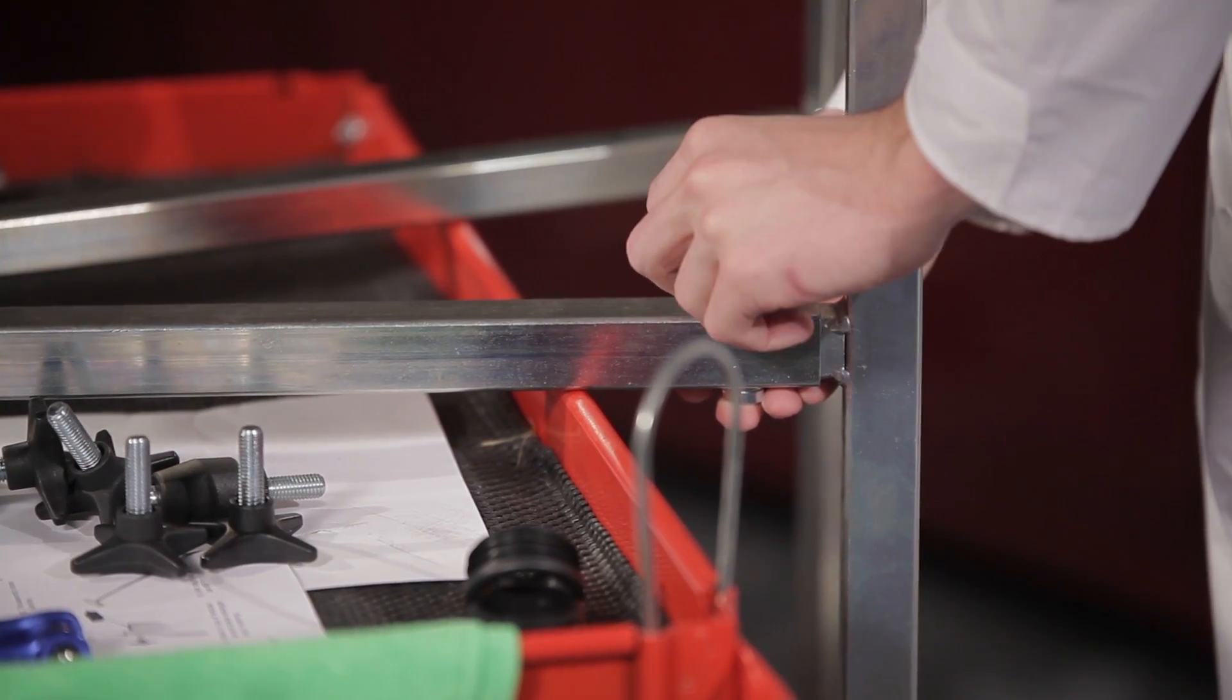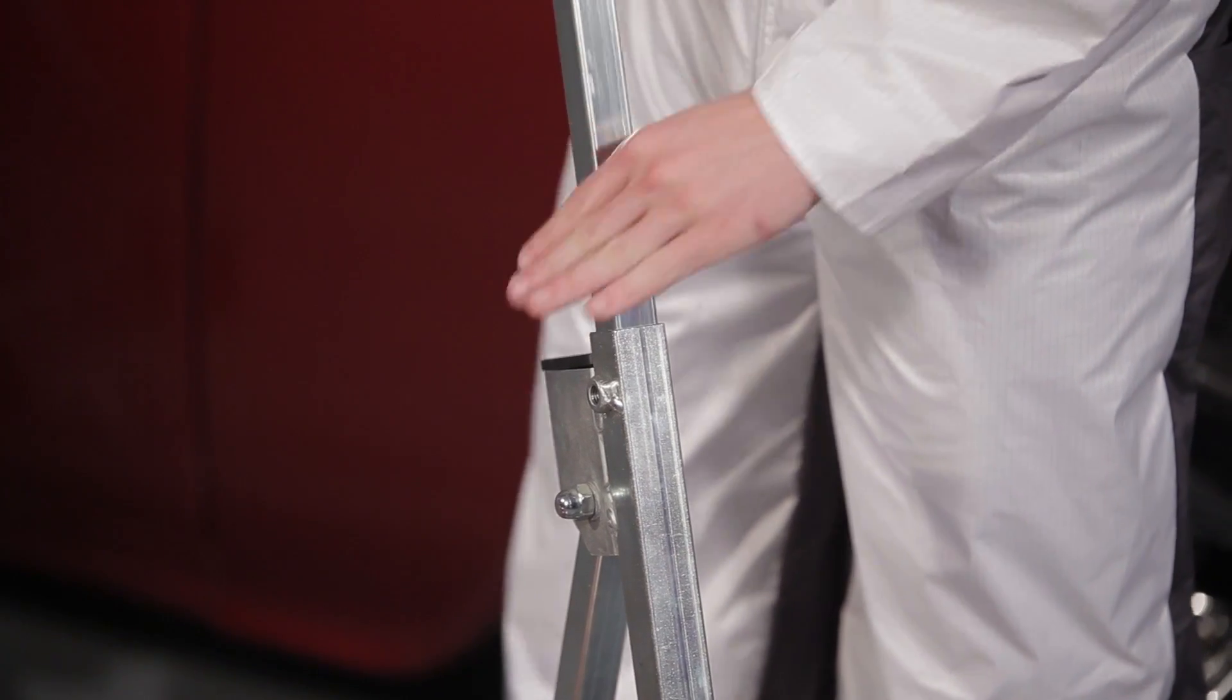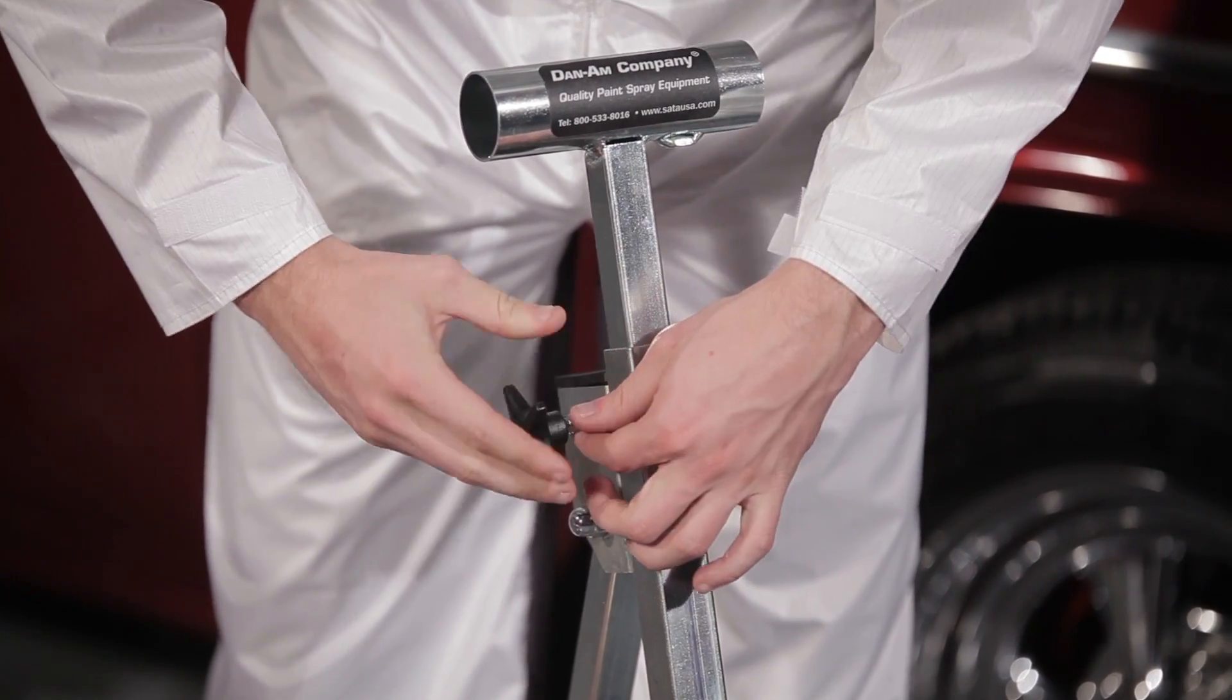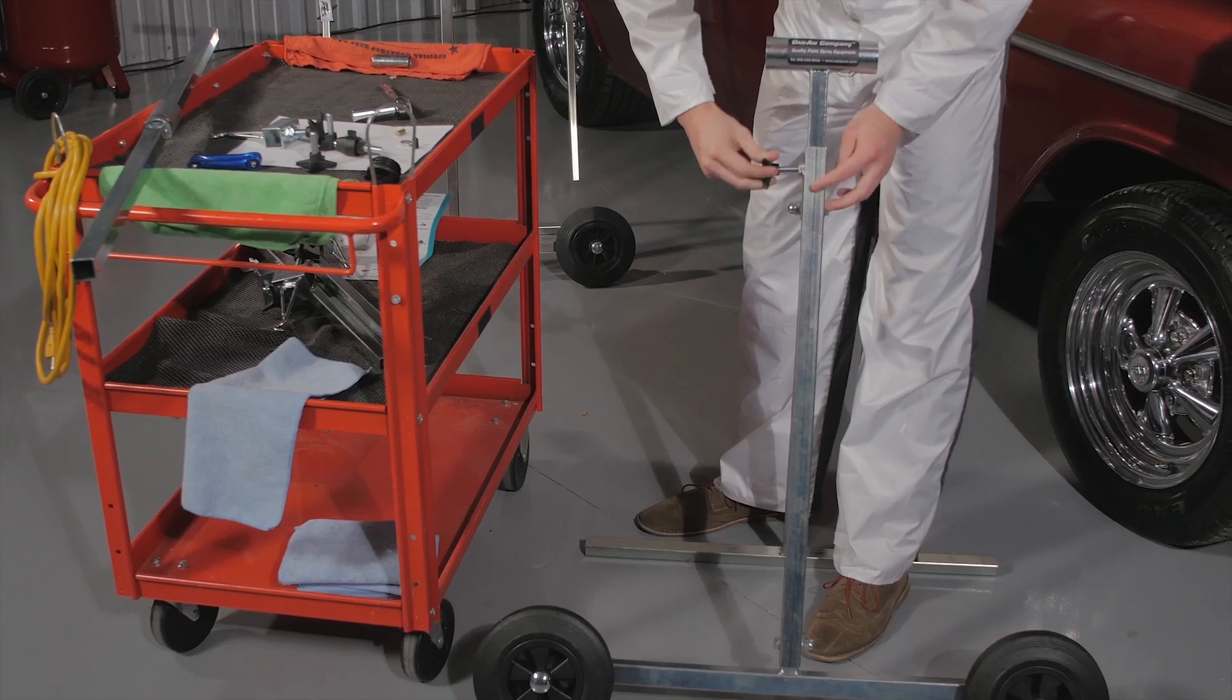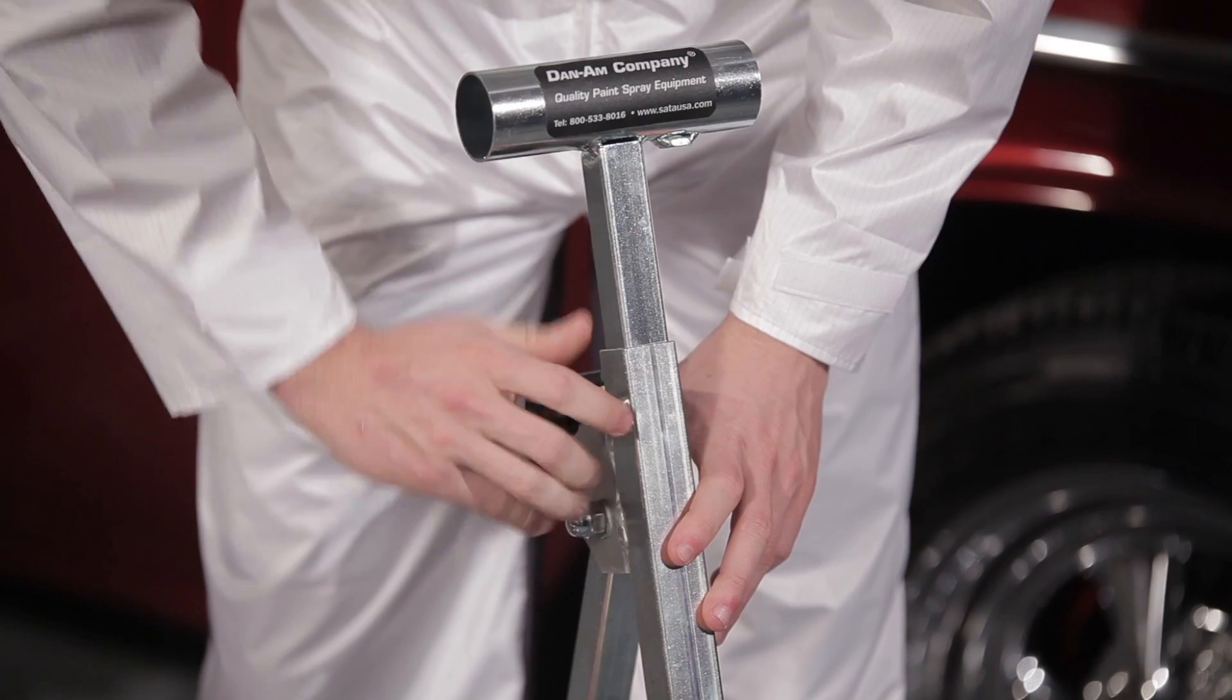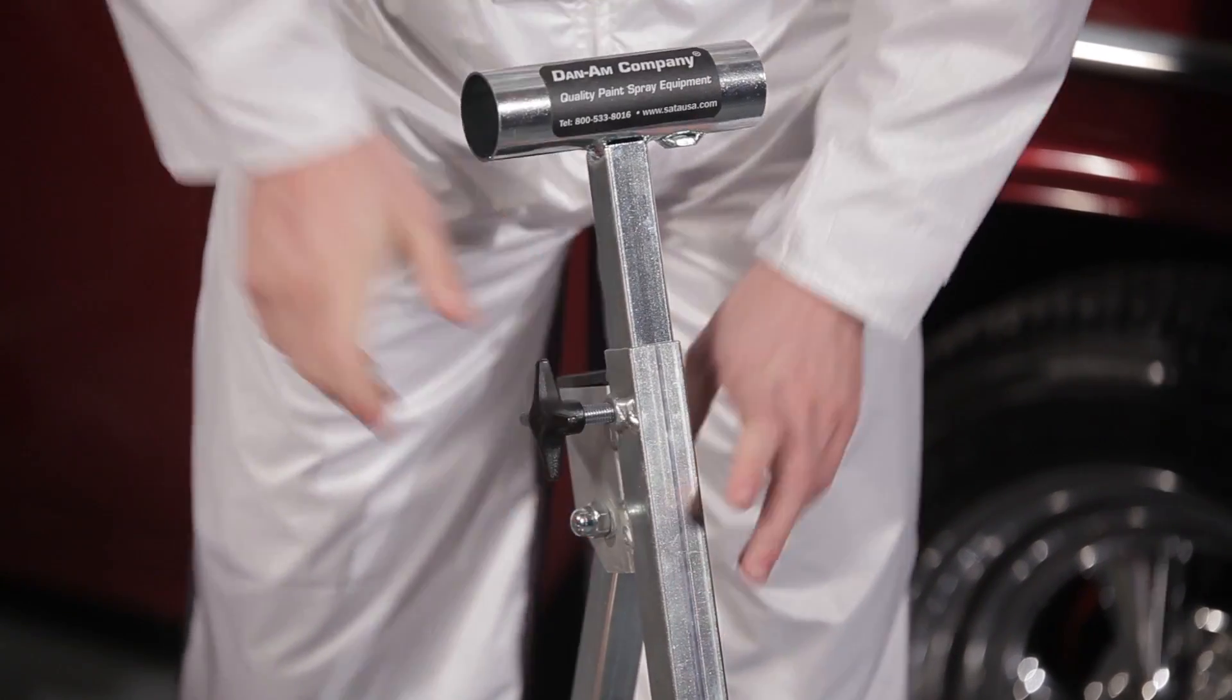Once the base is fully assembled, take the vertical support bar and slide the bottom end into the base of the EasyFlex stand. Make sure the raised bolt opening is facing the back of the stand. Screw the hand screw into the hole on the side of the front leg of the base. Tighten to secure the vertical support bar at whatever level is comfortable.